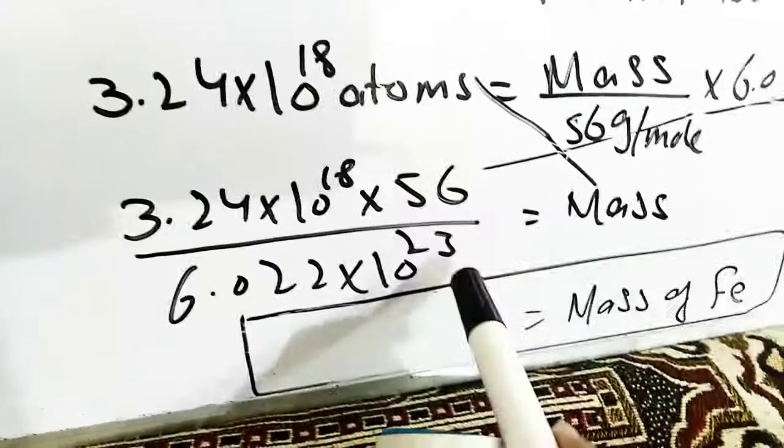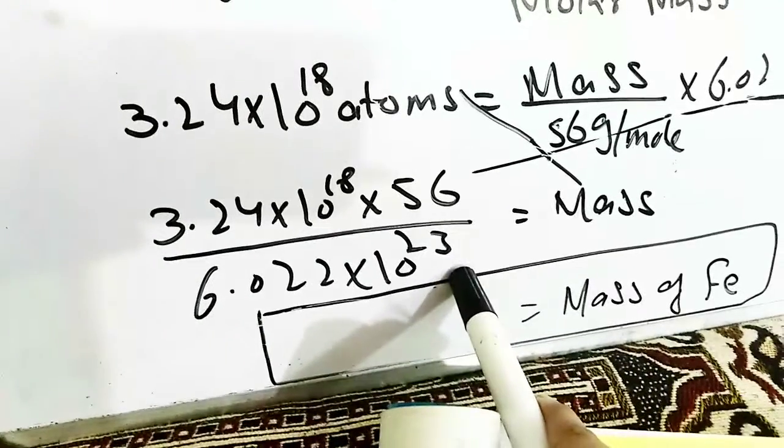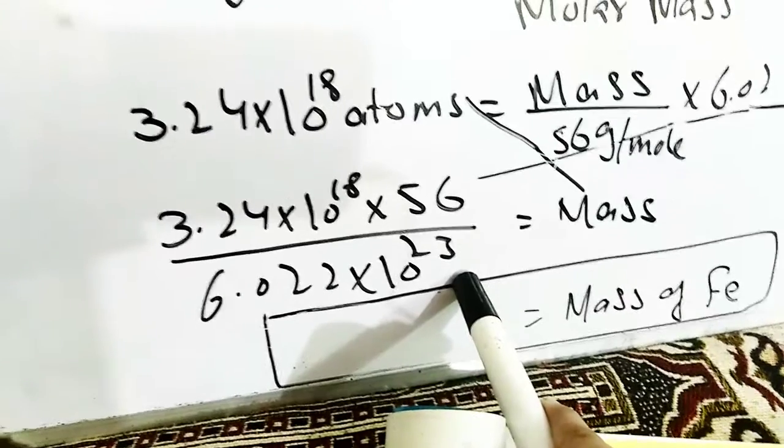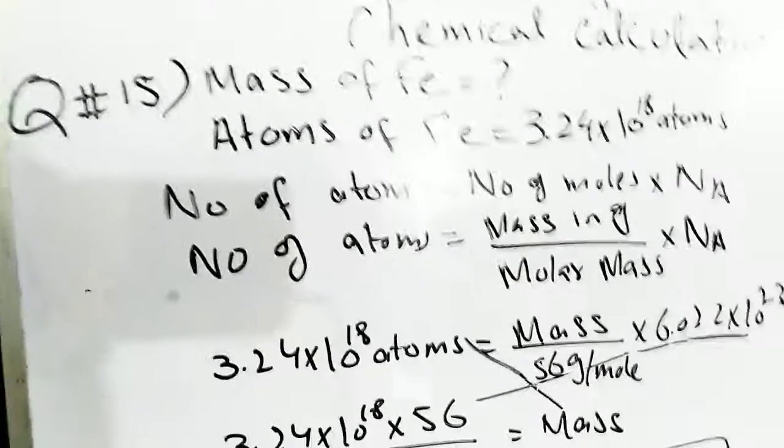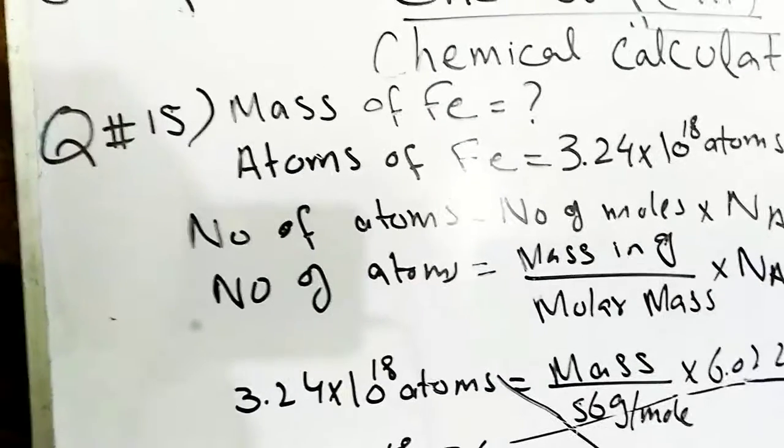We calculated the mass of iron from the particles, from the atoms of iron. In the same way, parts B, C, and D we can solve.